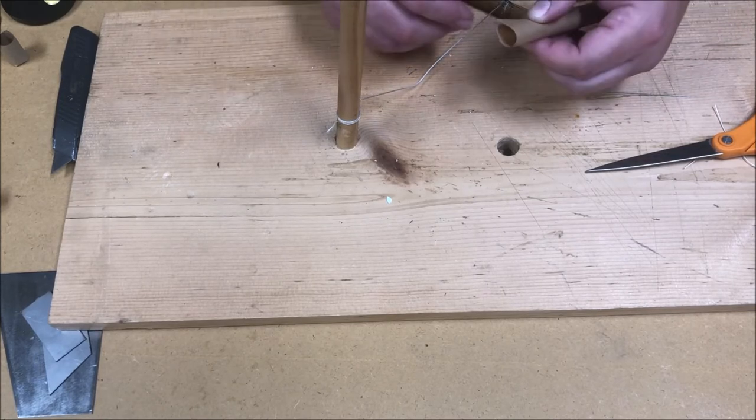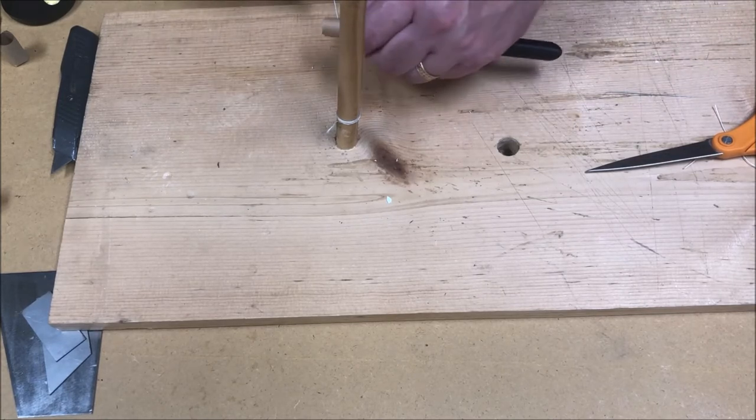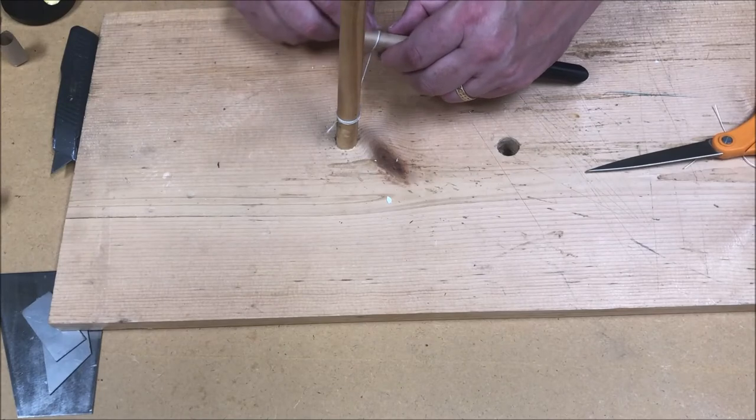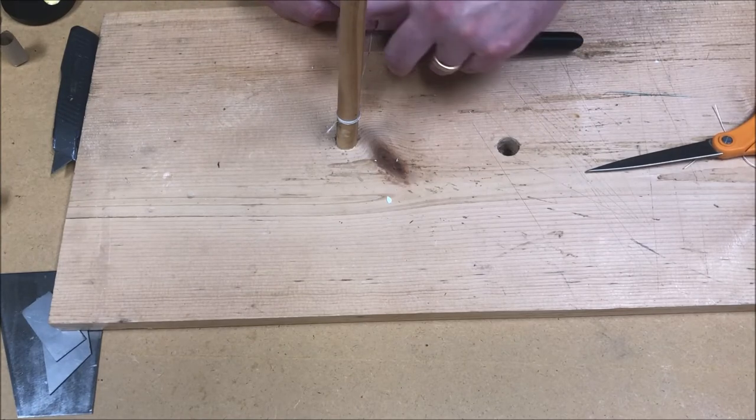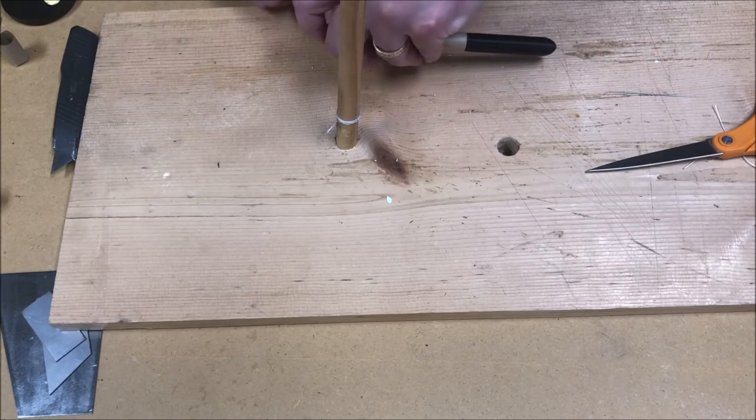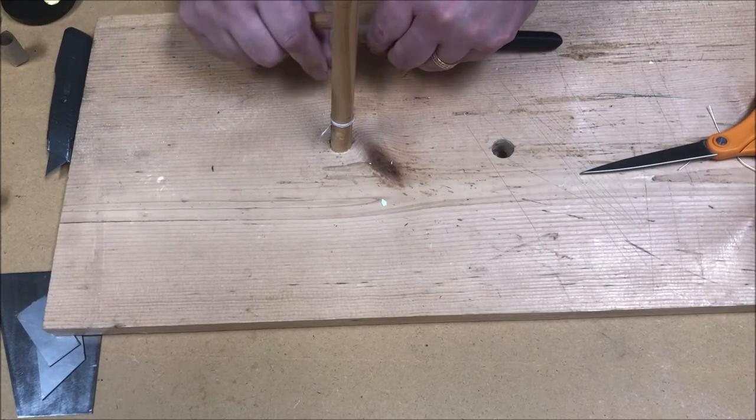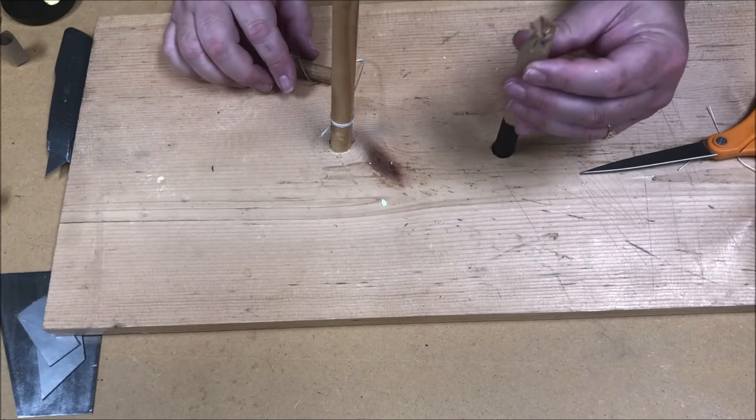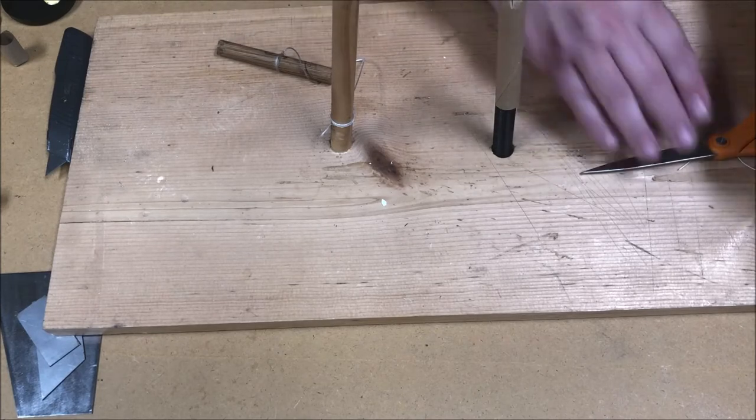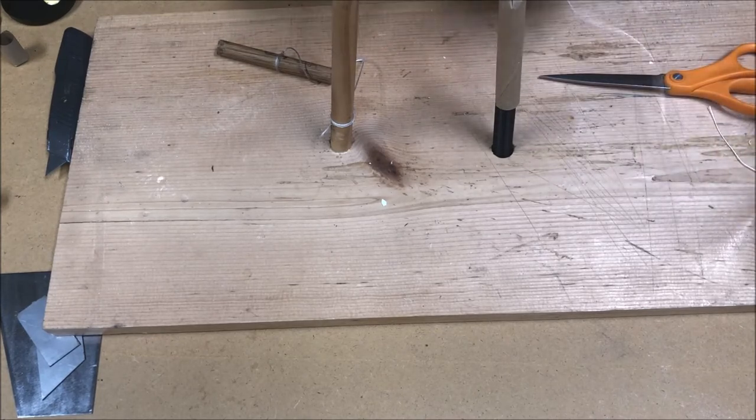So to use the choking cord, you simply position the string about where the nose of the bullet ends, put your finger over the end of the cartridge, and just pull the string tight. And that's going to make a flower type arrangement on the end of your cartridge.